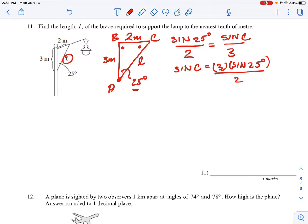So this is going to be 3 times sine of 25 divided by 2, which is sine of C is 0.6339, and then to find angle C we have to do the inverse sine of this. That means our angle C is equal to 39 degrees. We'll just round it to the nearest degree. So that means we do know this angle now here. We know it's 39 degrees.